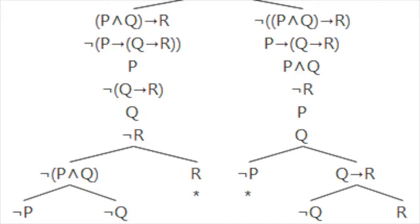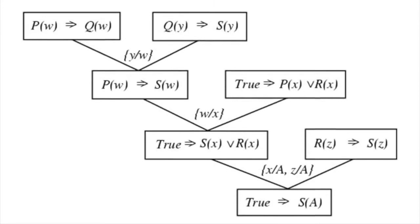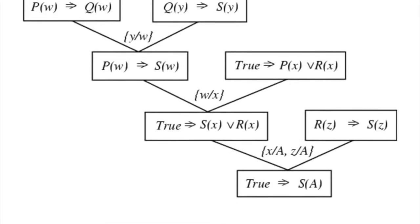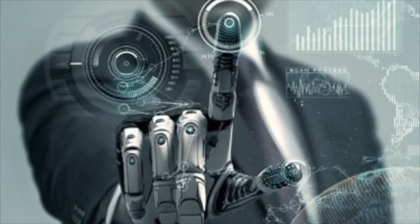In the laws of thought approach to AI, the emphasis was on correct inferences. Making correct inferences is sometimes part of being a rational agent, because one way to act rationally is to reason logically to the conclusion that a given action will achieve one's goals.